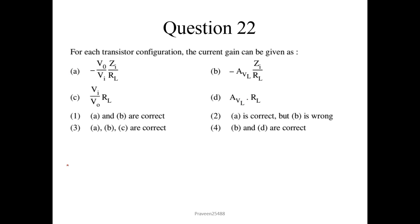Question number 22. For each transistor configuration, the current gain: -V0/Vi = Z/RL (option A is correct), and -V0/Vi = AVL × Zi/RL (option B is also correct). C and D are not correct. So A and B are correct — option 1 is the correct answer.